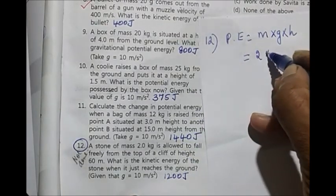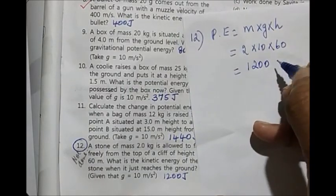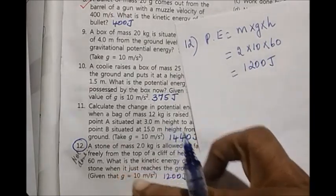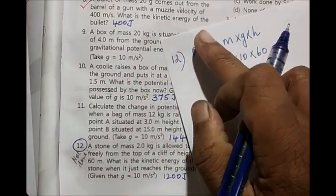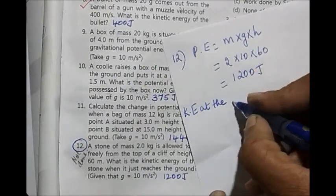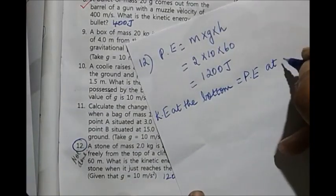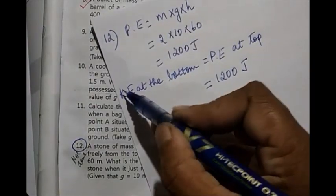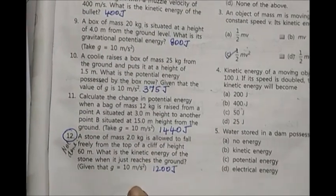This was the potential energy with which the stone was coming down. What is the kinetic energy of the stone when it just reaches the ground? We saw law of conservation of energy which says the potential energy at the top, when the ball was at a height, will be equal to the kinetic energy at the bottom. When it reaches the bottom, it will be moving, so it will have a kinetic energy that will be equal to potential energy at top. So kinetic energy at the bottom, also equal to 1200 joule. This is the main reason based on law of conservation of energy.